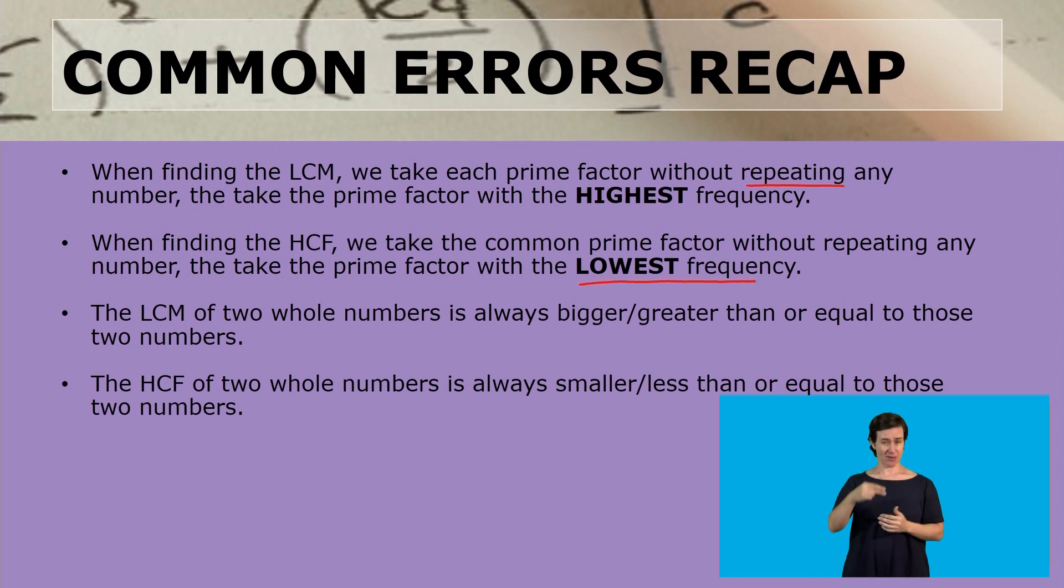If you're calculating the highest common factor and you find an answer that is bigger than those two numbers, then you know you did something wrong. You need to go back and recheck your work.